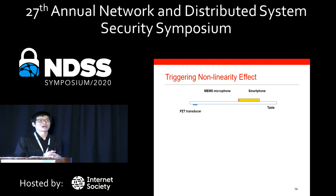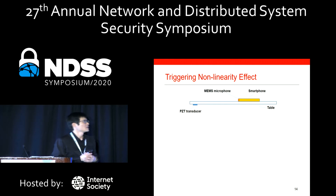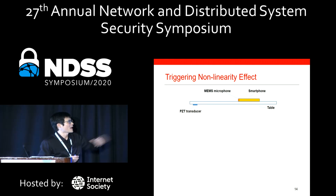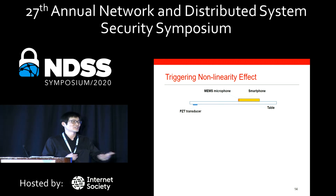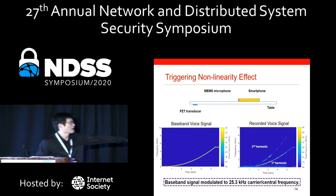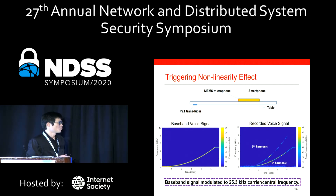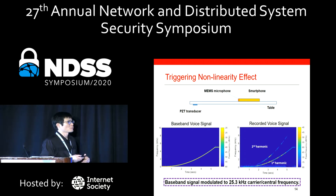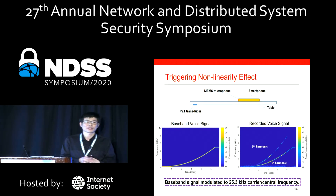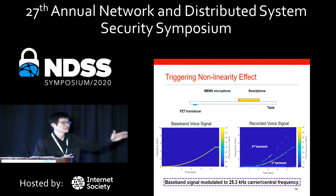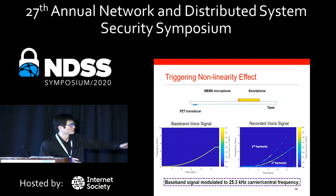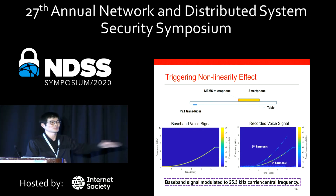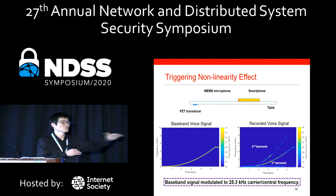We evaluate whether the ultrasonic guided wave can actually trigger the nonlinearity effect. We place a smartphone on the table and use the piezoelectric transducer underneath to launch the attack. We have a baseband voice signal — a chirp signal — modulated to a 25.3 kHz carrier frequency. For the recorded voice signal, we see a very strong first harmonic and second harmonic, demonstrating a strong nonlinearity. The first harmonic signal is almost identical to the original baseband signal, confirming that the ultrasonic guided wave can carry voice commands to attack the device.